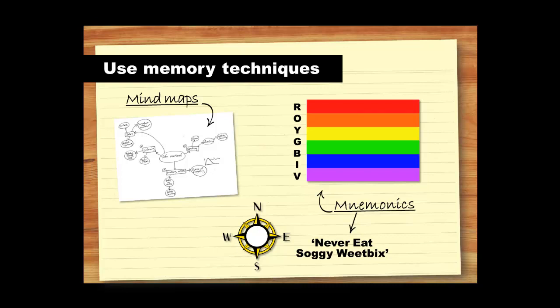ROYGBIV is an acronym for the sequence of colors commonly described as making up a rainbow. Never Eat Soggy Wheat Bicks is a mnemonic device used to remember the directions of north, east, south and west. Try to develop some memory triggers for your course content.